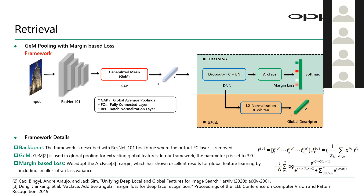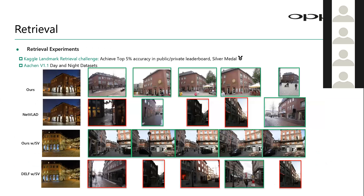In this network, the backbone is ResNet-101. We replaced the pooling layers with GEM pooling instead of max pooling or min pooling, which helps get better discriminative feature maps at inference. We also used an ArcFace-based margin loss to train the CNN. After these three modifications, we achieved a silver medal in the Google Landmark Retrieval Challenge at ECCV, giving us confidence in our network. Our network outperforms NetVLAD and DELF on the AACHEN dataset.